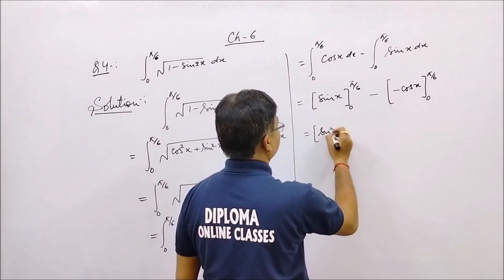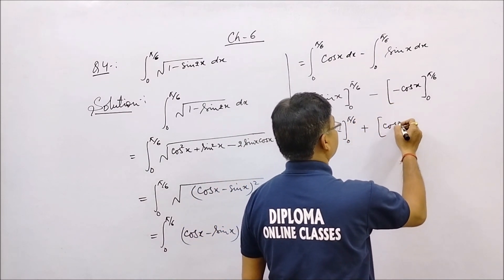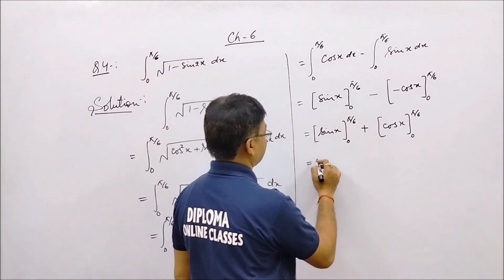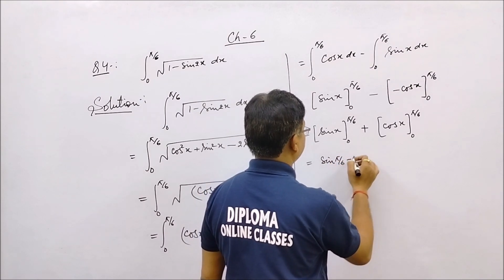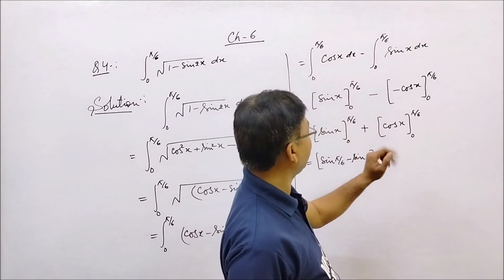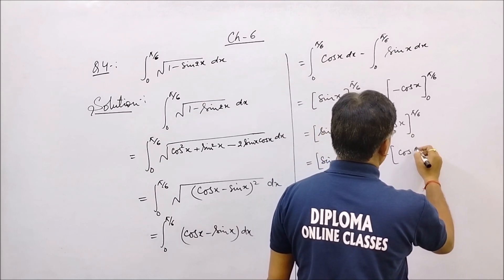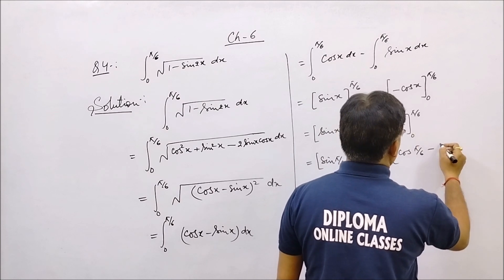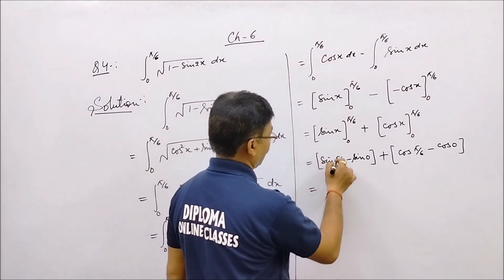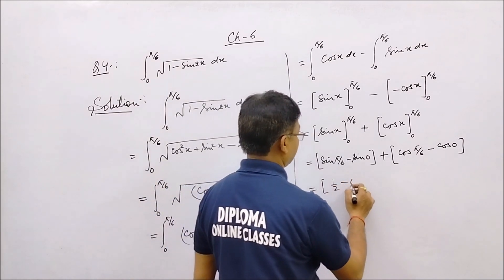Now evaluating: sinx from 0 to pi by 6 gives sin(pi by 6) minus sin(0), and cosx from 0 to pi by 6 gives cos(pi by 6) minus cos(0). So the value is sin(pi by 6) minus sin(0) plus cos(pi by 6) minus cos(0), i.e., 1/2 minus 0 plus under root 3 by 2 minus 1.